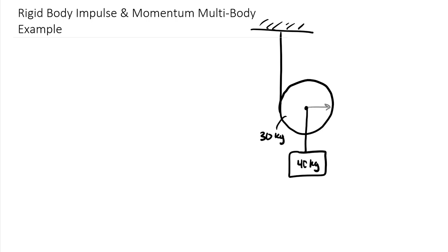We have a radius of the pulley equal to 0.375 meters. On the right edge of this pulley, we're pulling upwards with a 380 Newton force. We're also given that there's an initial downward velocity, V₁ equal to 1.2 meters per second. One key thing is that we have initial velocity and need to determine if this 380 Newtons pulling upwards is large enough over a certain amount of time — force times time impulse — to reverse the direction of movement. We also have momentum of both our pulley and our lower block.